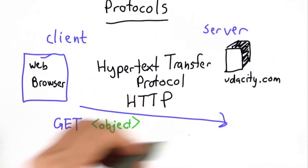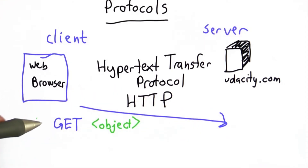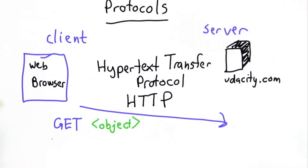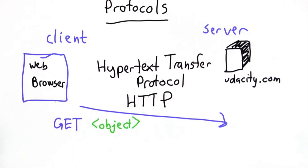That's all the client does — it sends a message like this. And if you remember the Python code for get_page, it's calling some library function that actually does this. It's sending the GET message to the server.